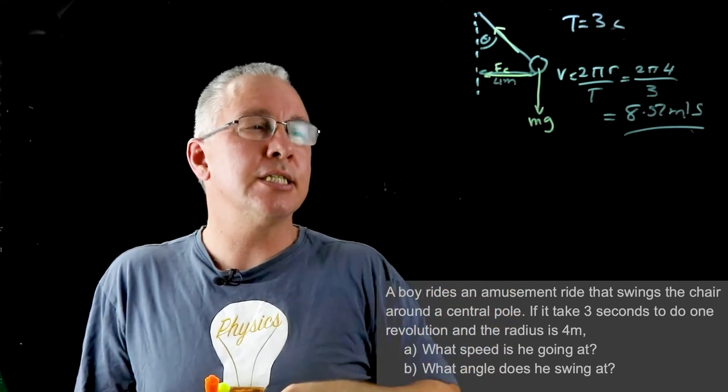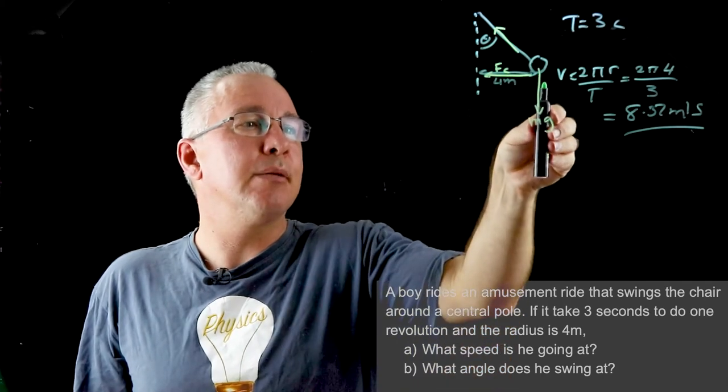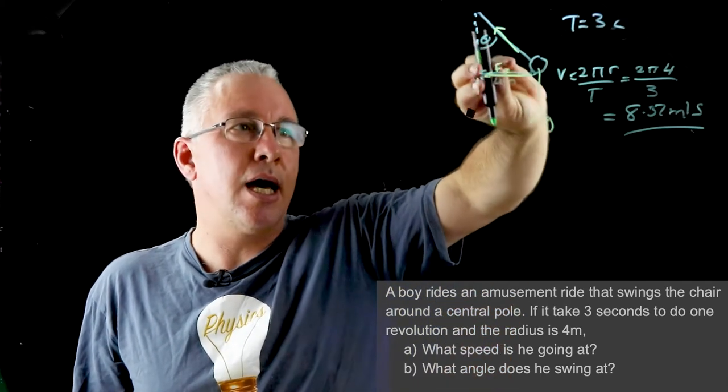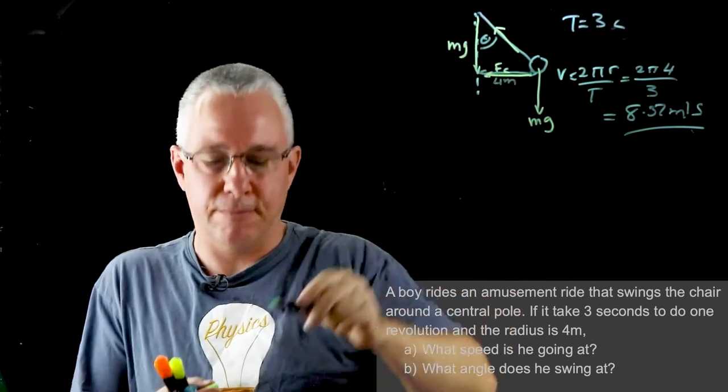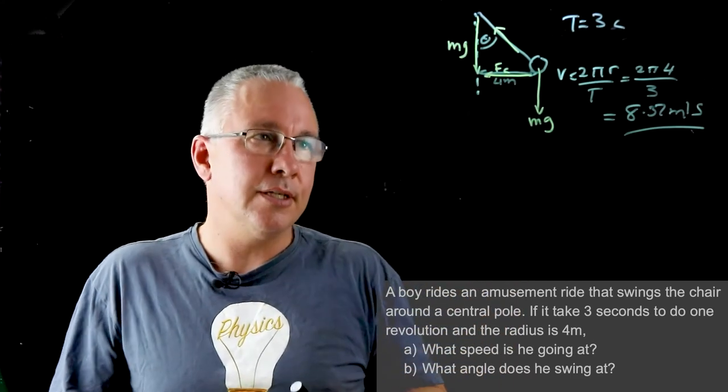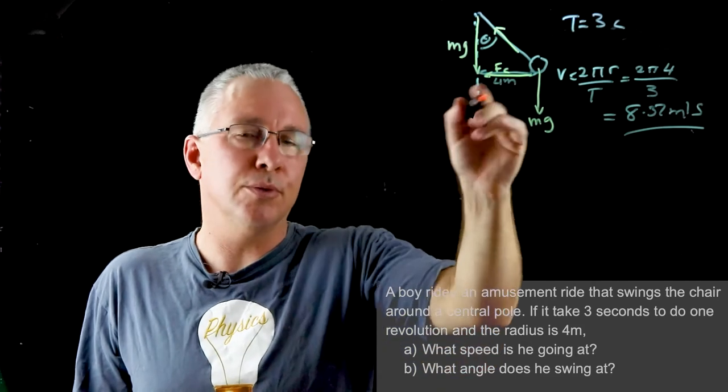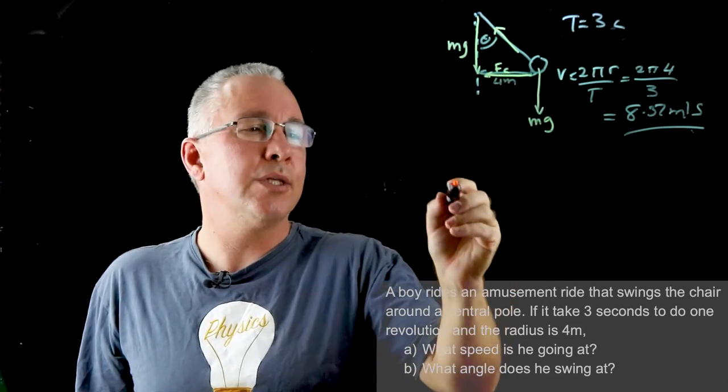Now the angle as you can see can be determined by simply moving this vector which is downward up to here. So we're going to put this vector over here and it's the same vector. Now as a result you can see that using a simple trig ratio we can work out what the angle is.